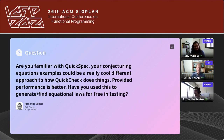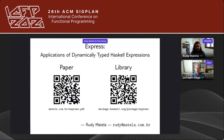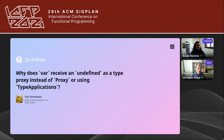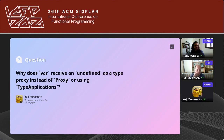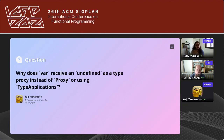Yuye Yamamoto asks: why does the var function receive and define its type as an undefined proxy value instead of using a Proxy type or type applications? Rudy answers: It's just for backwards compatibility. Using undefined is more backwards compatible because the Proxy type was introduced in a specific GHC version, and I wanted to support earlier versions. There's no reason Proxy couldn't have been used.